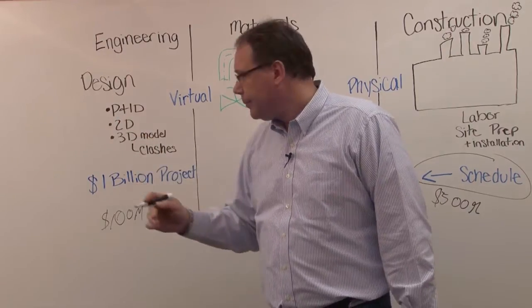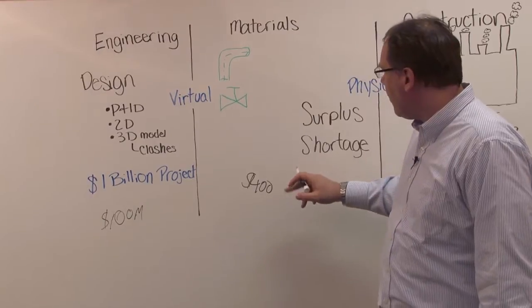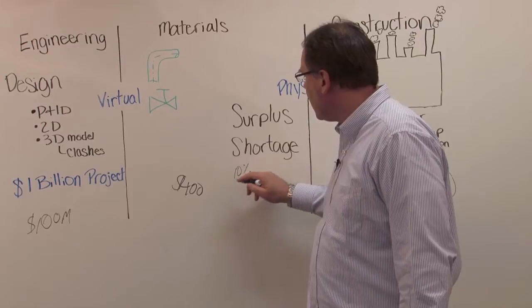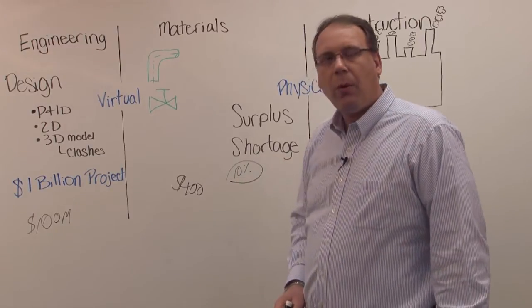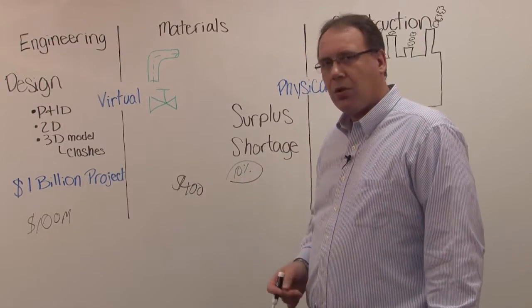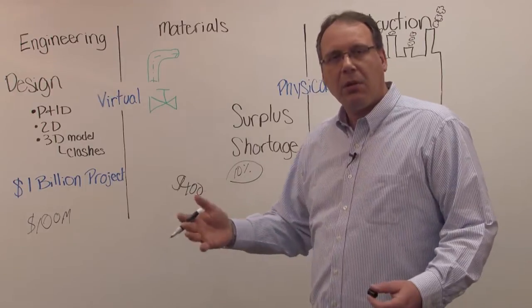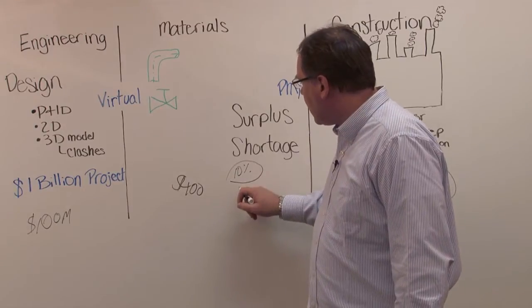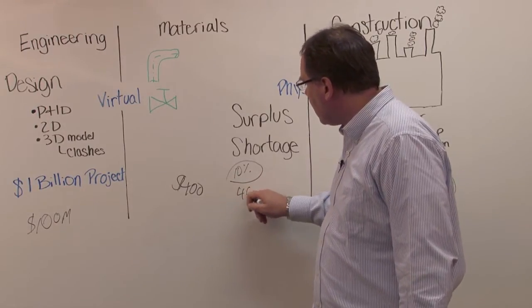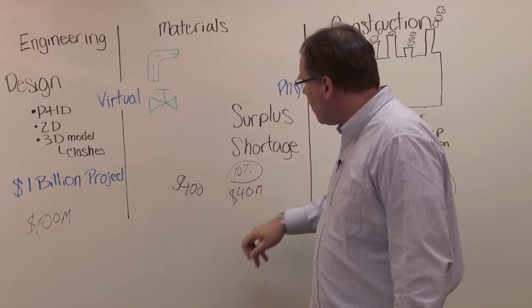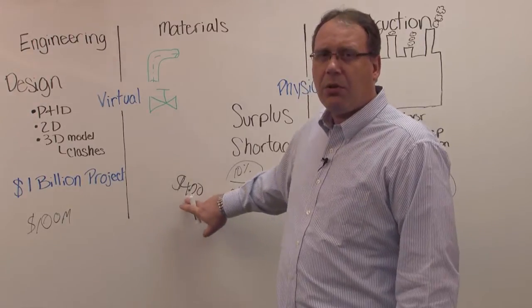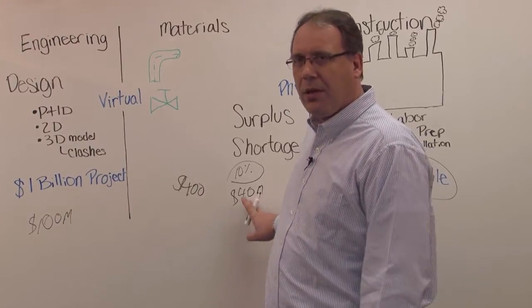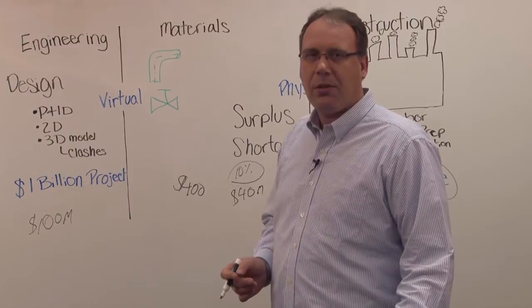For example, a normal surplus can be perhaps around 10% of surplus in the normal way when you do the execution without really a robust materials management system. So 10%, that's 40 million. Of the 400 million of the material costs, they're spending 40 million on surplus, just to make sure that they have always enough materials there.